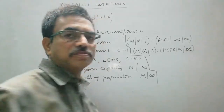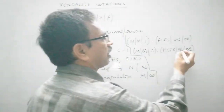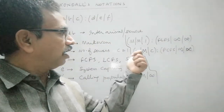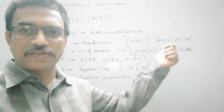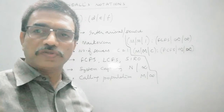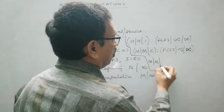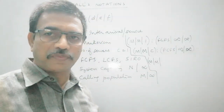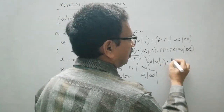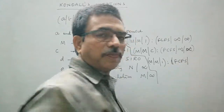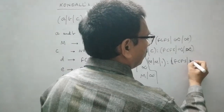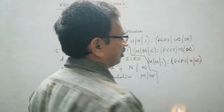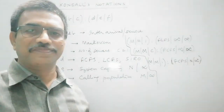And suppose if there are multiple servers, then we can designate the multi-server model as M slash M slash C colon FCFS slash infinite slash infinite. So for infinite calling population and infinite service capacity, in first come first served discipline with multiple servers, this is the designation. Suppose the model follows exponential inter-arrival and service times distribution, with single server, first come first serve queuing discipline, and limited capacity, with infinite calling population — then it can be designated accordingly.